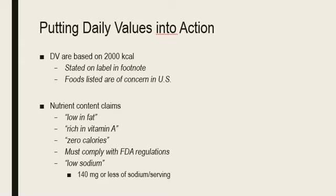The daily values are based on a 2,000 calorie diet, as stated at the bottom of the Nutrition Facts Label. Nutrients to consume less of include total fat, saturated fat, trans fat, cholesterol, total and added sugar, and sodium — these are found in the top portion of the label. The nutrients you want to consume more of are listed below the thick line on the Nutrition Facts Label.